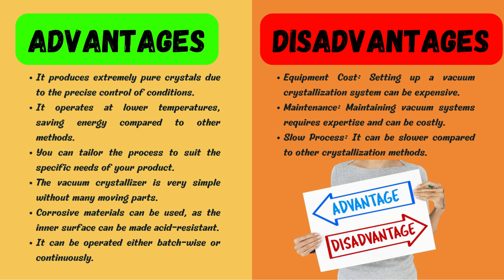Another advantage is corrosion resistance: vacuum crystallizers can handle corrosive materials as the inner surface can be made acid-resistant, which is important when working with chemically aggressive substances. The last advantage is flexibility in batch or continuous operation: vacuum crystallizers can be operated either batchwise or continuously, providing flexibility in production methods.